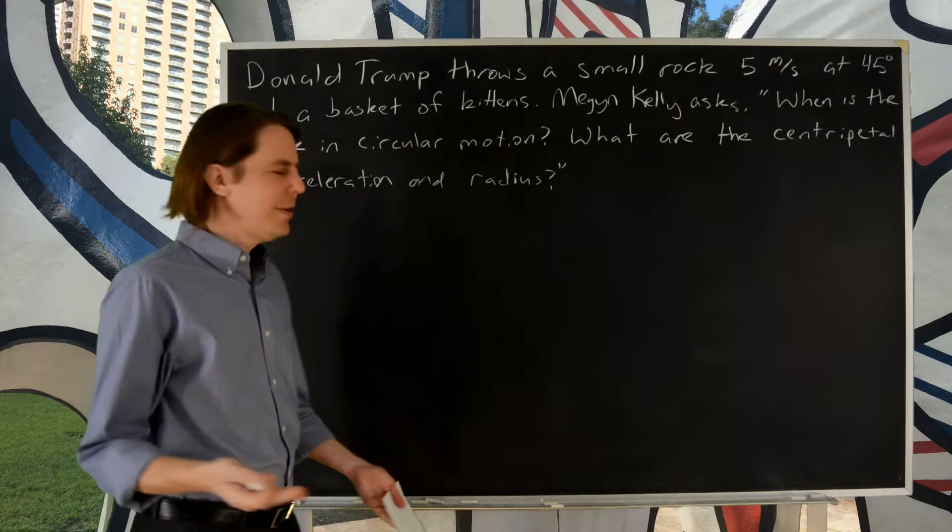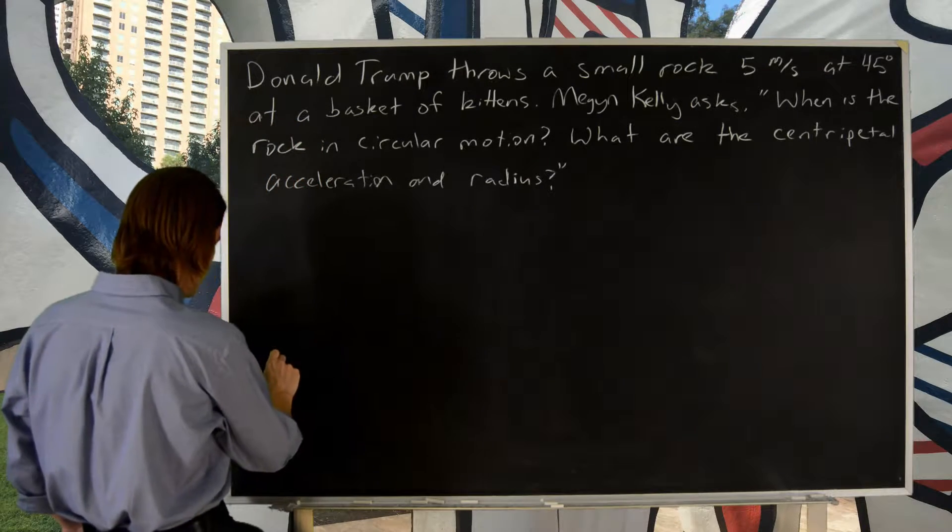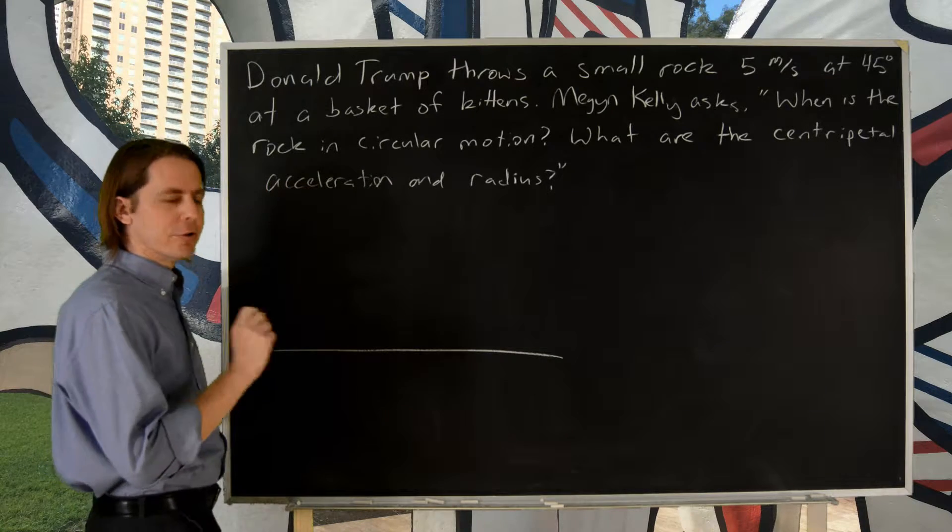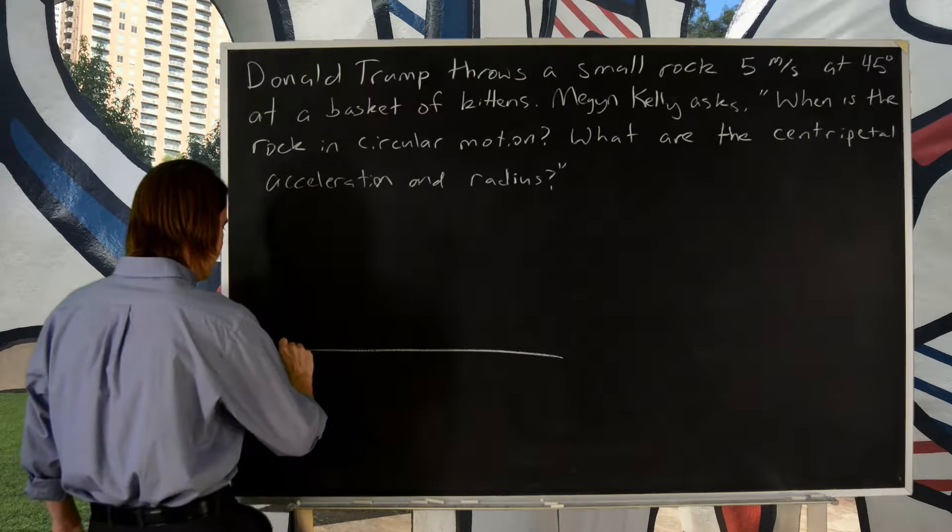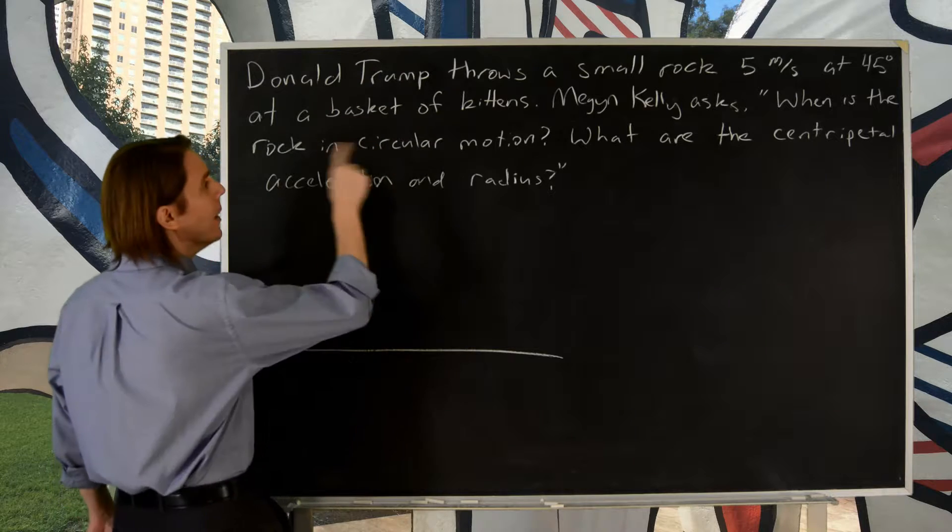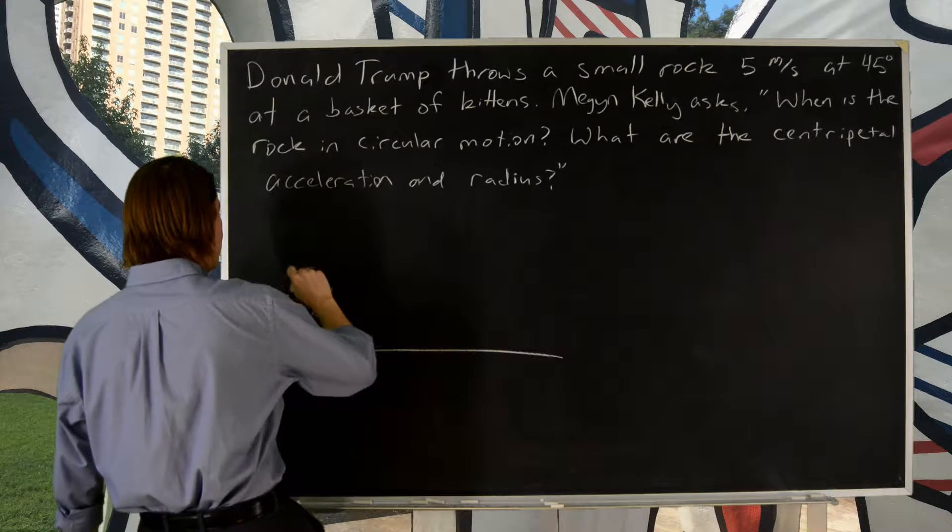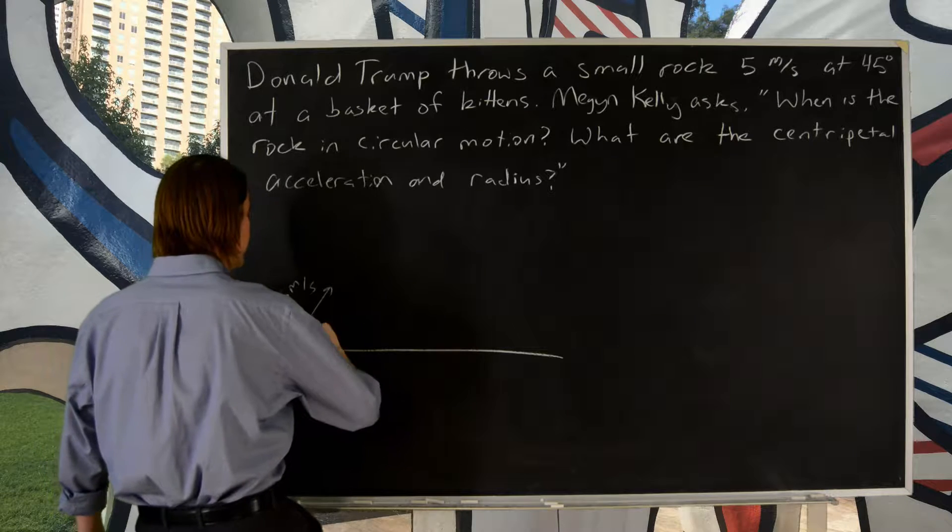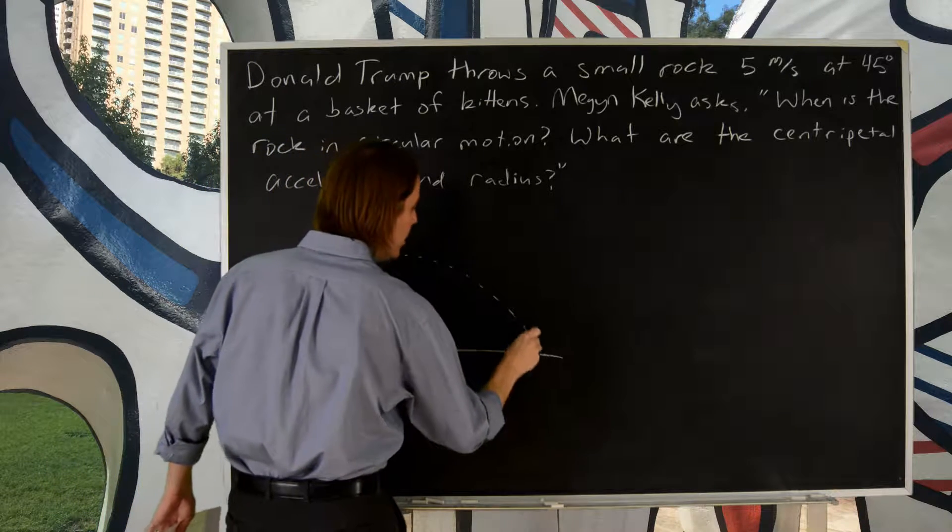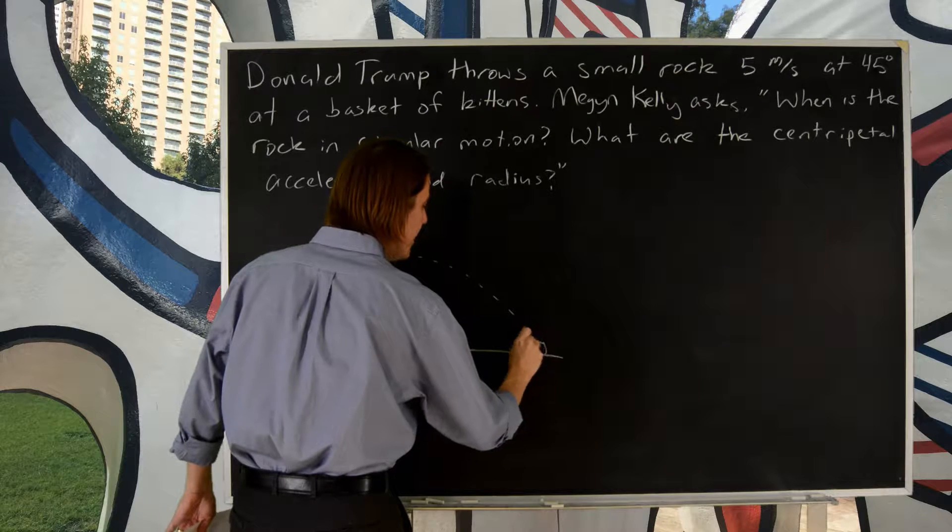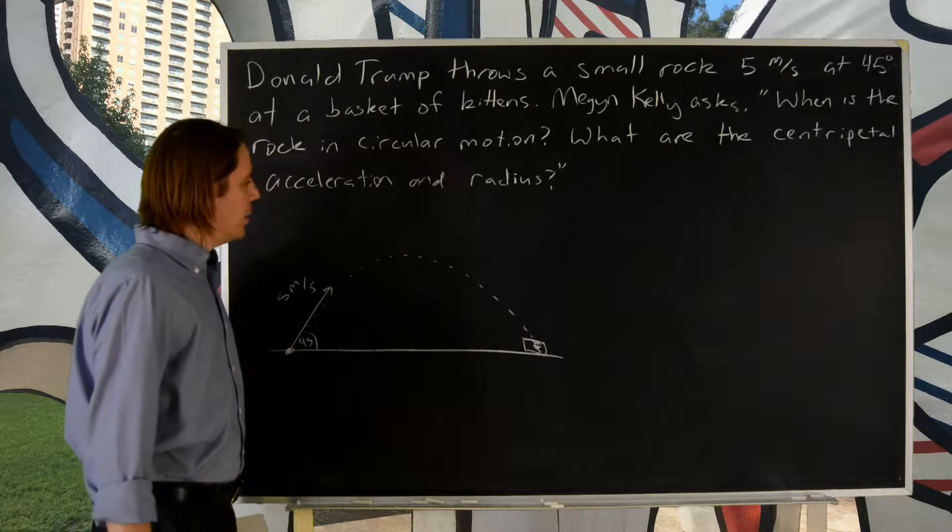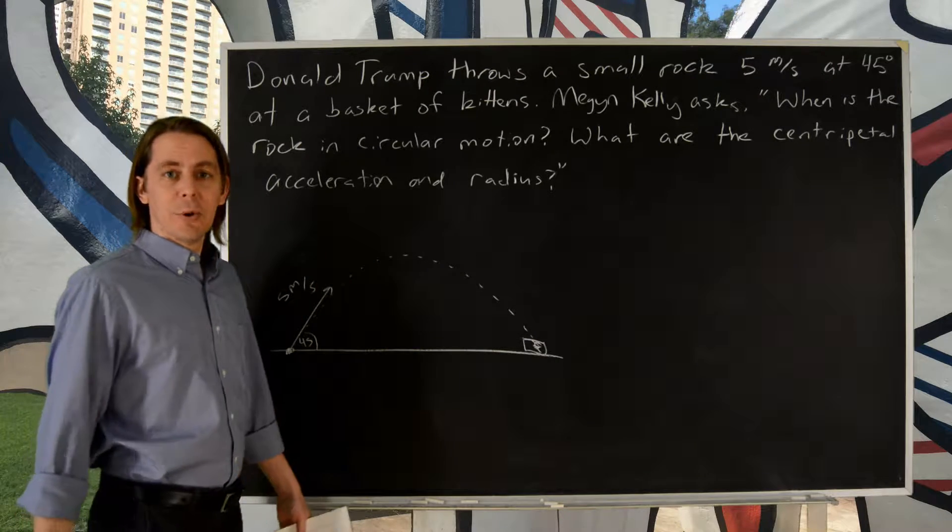Trump says, what are you talking about circular motion? I threw a rock in a perfect projectile trajectory at the kittens. I threw it from here, 5 meters per second, 45 degrees, and we know what it'll do. It'll make a parabola, not a circle, and it'll hit the basket of kittens. One of the kittens died, actually. So how could you ever ask a question about circular motion?